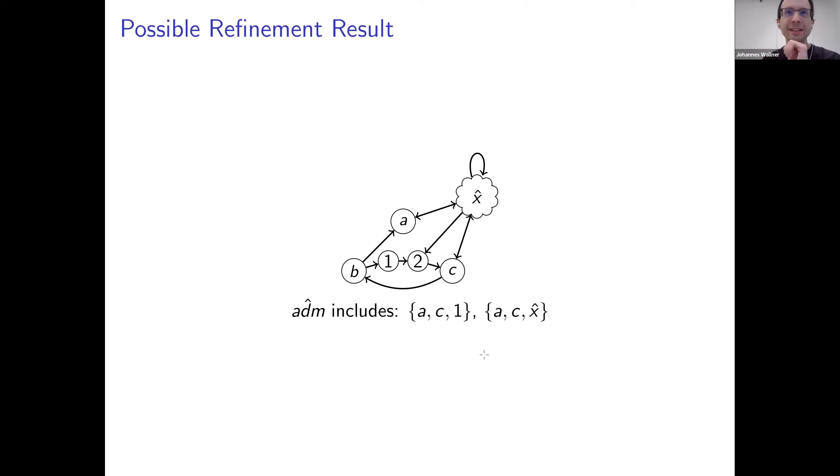And now what I want to highlight here in the last minute: here we have two abstract admissible sets that can be used in a sense to gain insights why this particular argument is actually credulously accepted within this particular framework or the clustered framework. So here, for instance, this admissible set actually tells us, because of faithfulness, there exists a